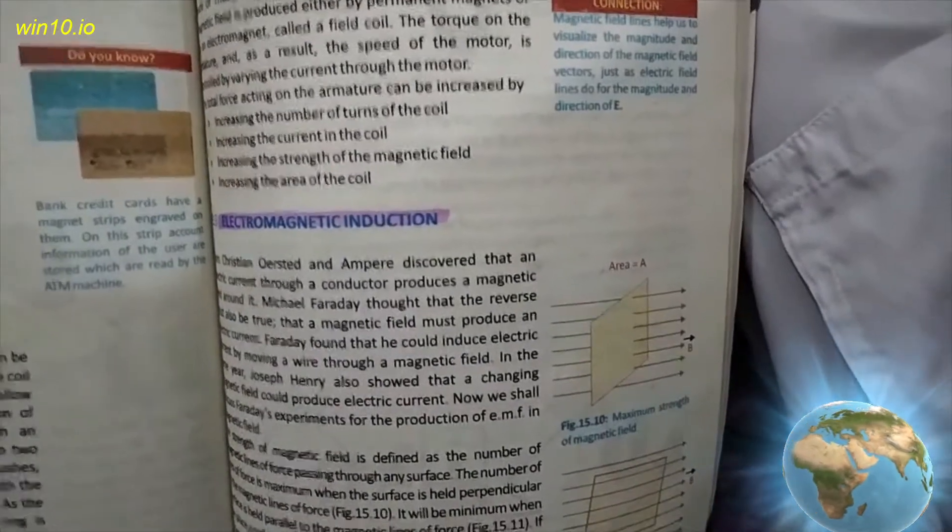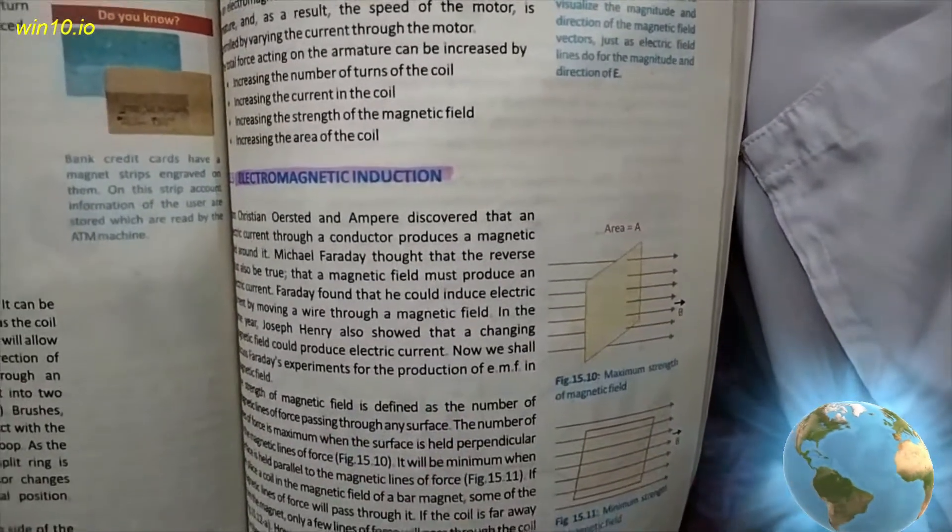Page number 122, this skip. 123, 124. Up to here you don't need to do anything. Page number 125, electromagnetic induction. This topic complete.